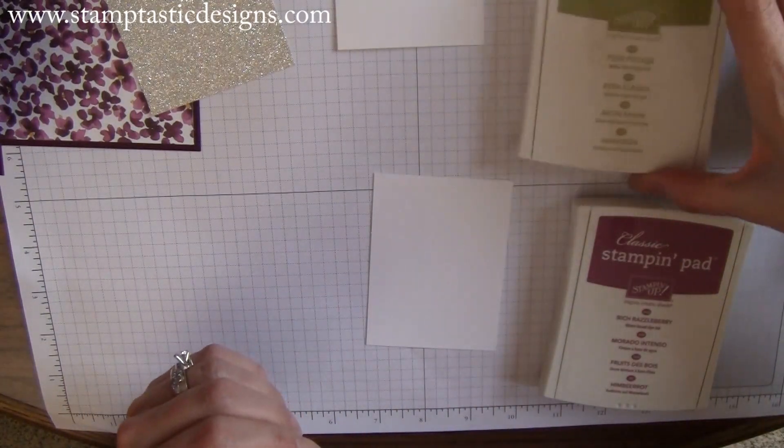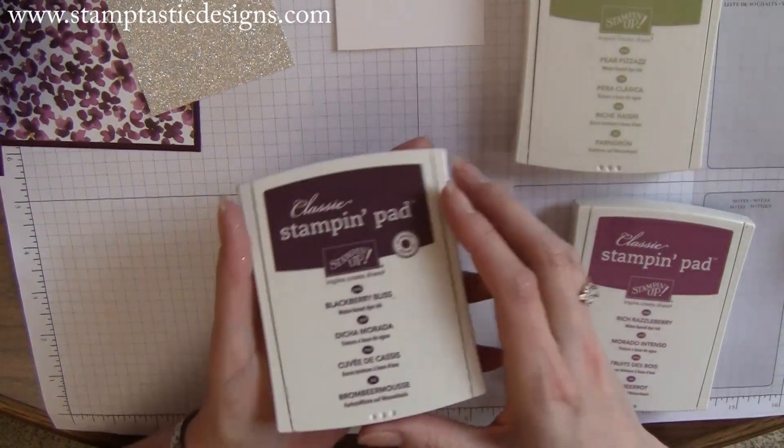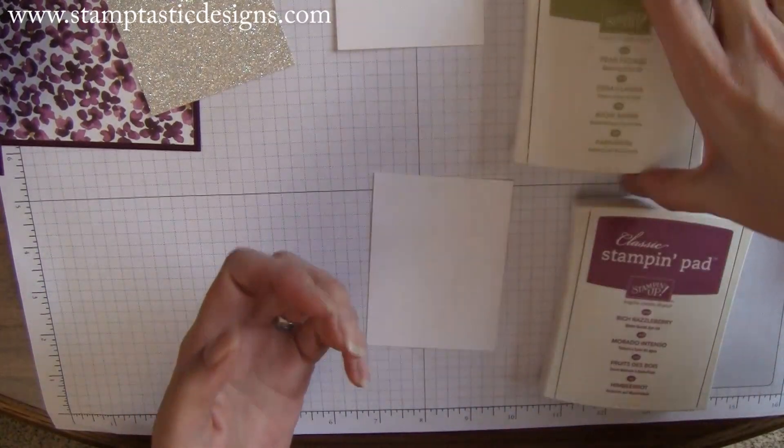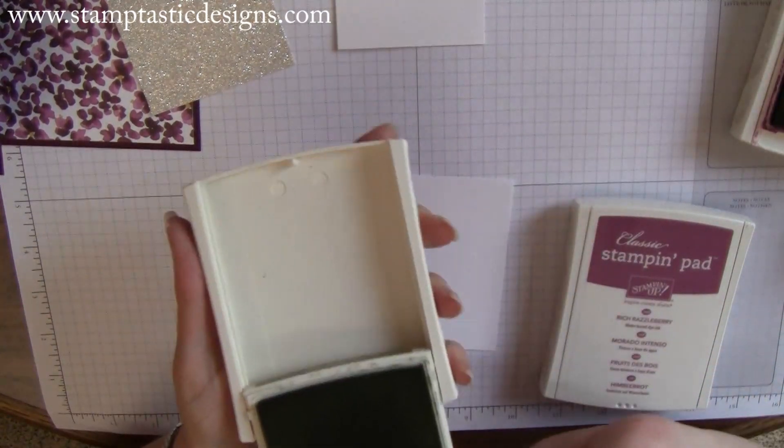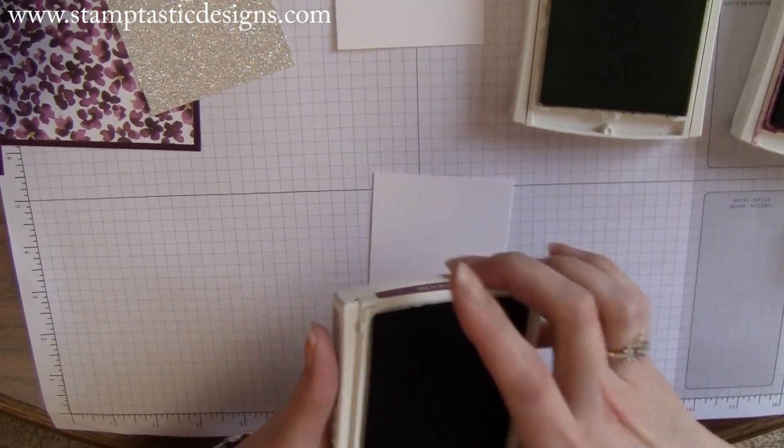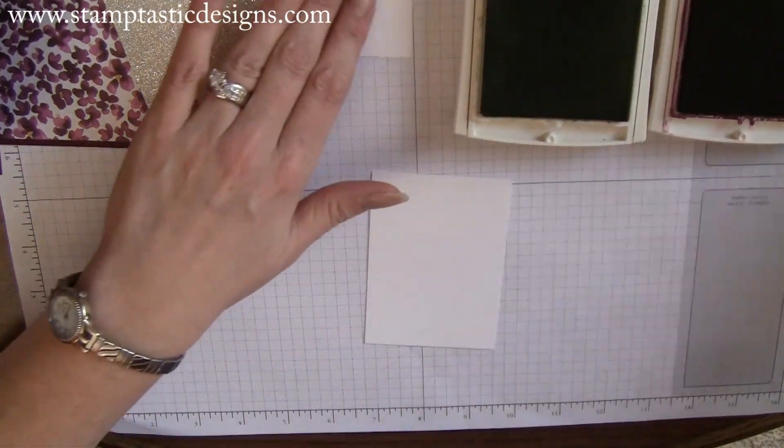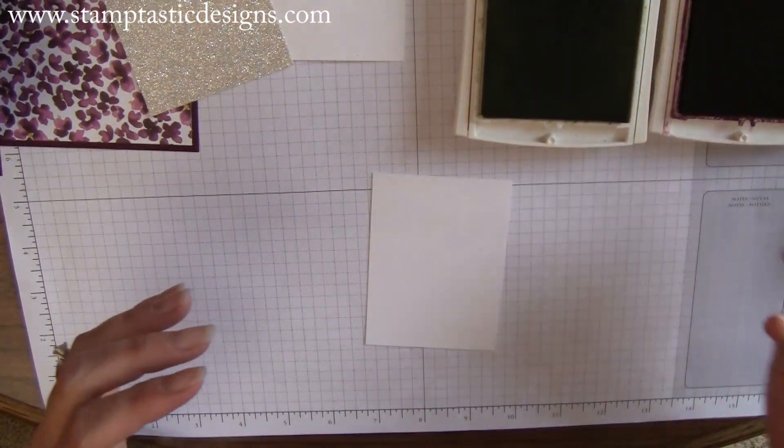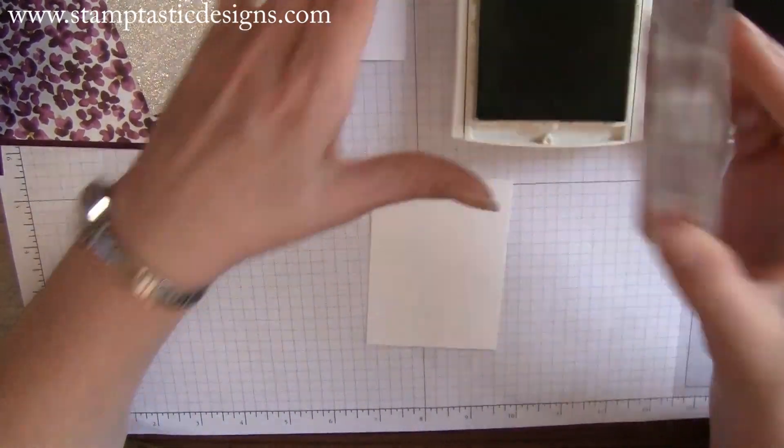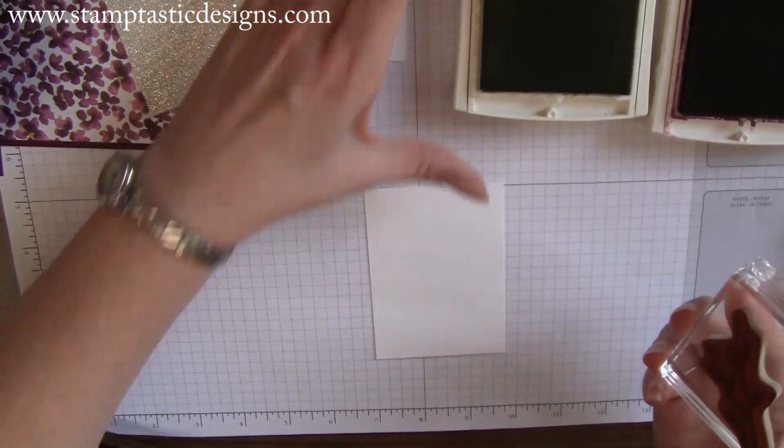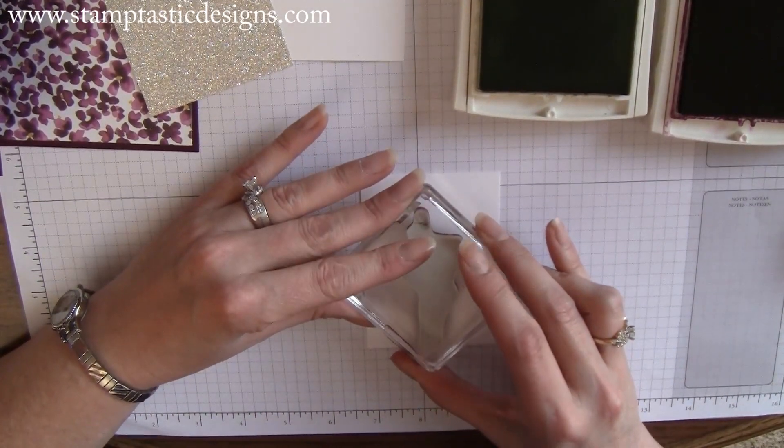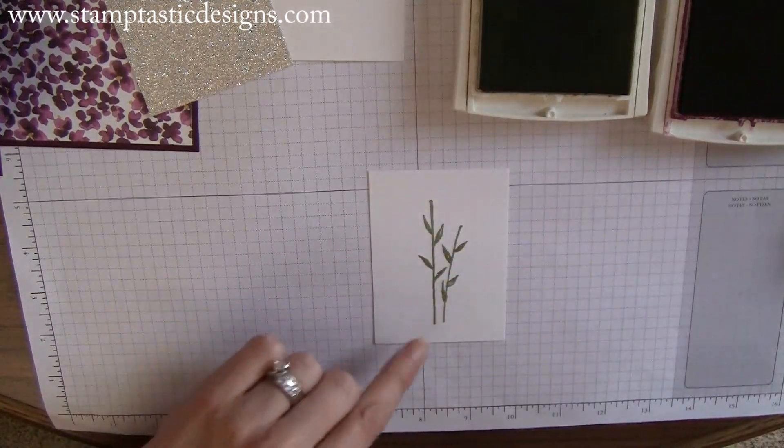For this project I used three different colors: Blackberry Bliss, Pear Pizzazz, and Rich Razzleberry. First I'm going to ink up one of the leaf images from the Painted Petal stamp set and stamp it directly in the center of my white paper.